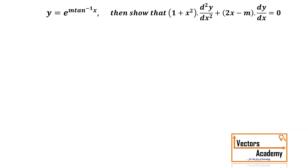Now the next question: we have y equal to e raised to m·tan⁻¹x, where m is a constant. Then we have to show that (1 + x²) d²y/dx² + (2x − m) dy/dx equals 0.